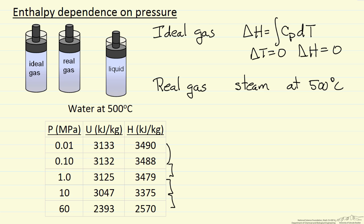But for a real gas at still 10 bar pressure, enthalpy is pretty close to ideal gas behavior — we're talking about a percent, less than a percent change.